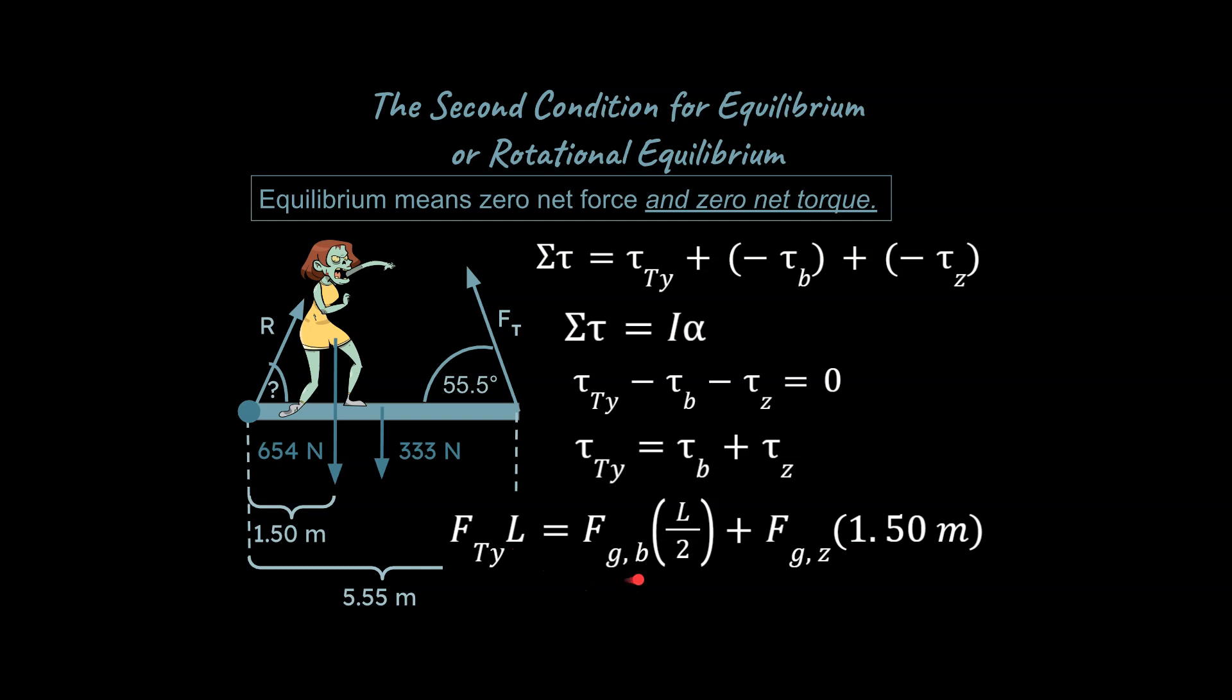This is going to be the force due to gravity of the beam itself. So we're going to assume this is a uniform beam. So the center mass of the beam is going to be right in the middle. So we take that L, that length of 5.55, we divide it by two, and that's where the force is going to be considered to be applied. And then we also need to be careful about where the force from the zombie is applied, and that's going to be at 1.50 meters.